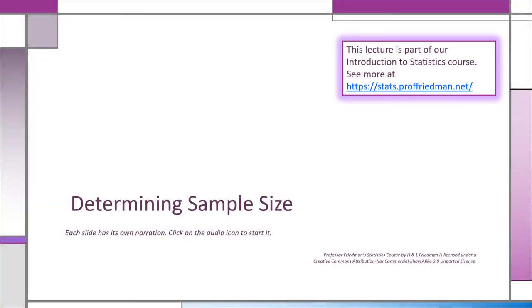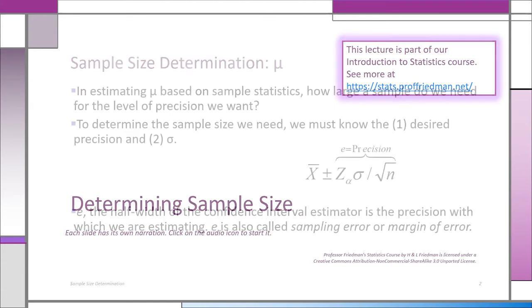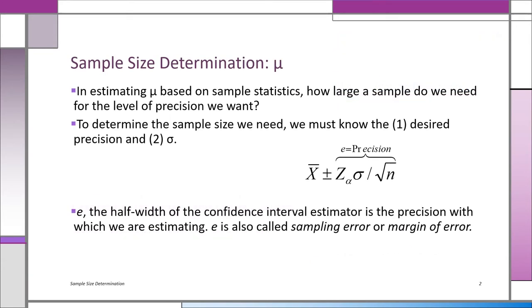Welcome to our lecture on determining sample size when making inferences. Here's an issue we haven't really talked about much up until this point. How do we know how large a sample to take? When we're making inferences about mu, we're using the sample mean, x-bar, as a point estimator of mu. The sample size is n, but how large should n be?